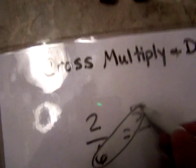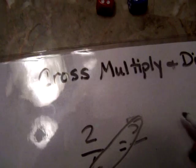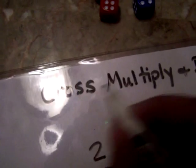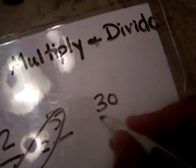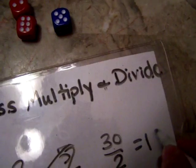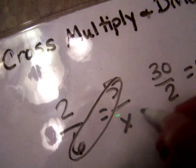And here you've got six times five is thirty. And then that's your cross multiply. Now you divide by the other one. Two equals fifteen. So that's what goes here. X equals fifteen.